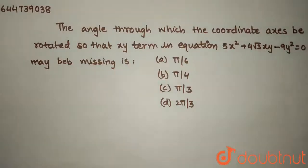So today we have been given this question. In this question it states that the angle through which the coordinate axis be rotated so that the xy term in the equation 5x² + 4√3xy - 9y² = 0 may be missing is.